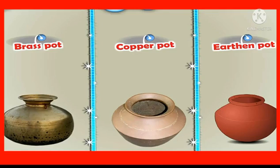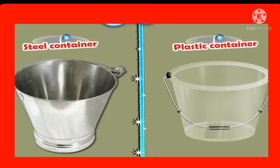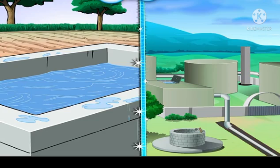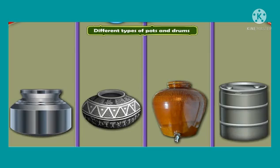Earlier, students, brass pots, copper pots, as well as earthen pots were used to store water. Nowadays, steel or plastic is also used to make different containers for storing water. People also build tanks in their houses to store water. Different types of pots and drums are also used to store water.